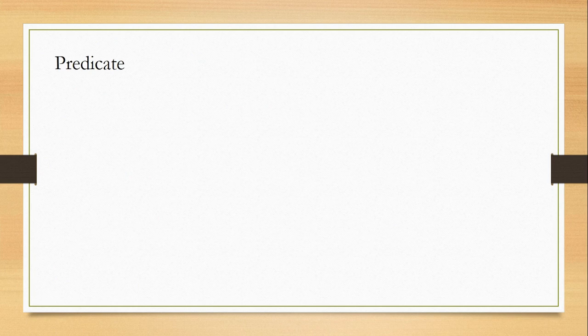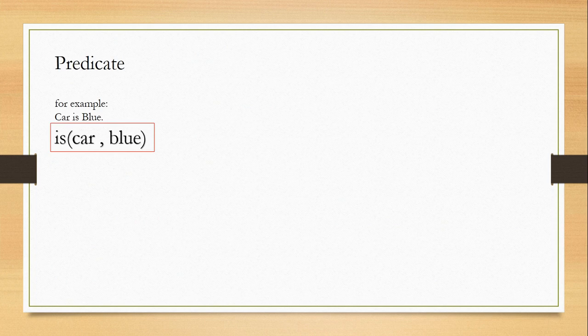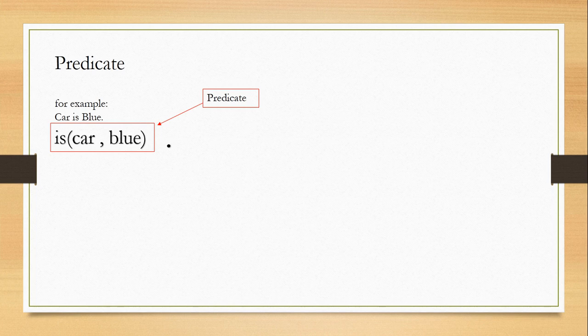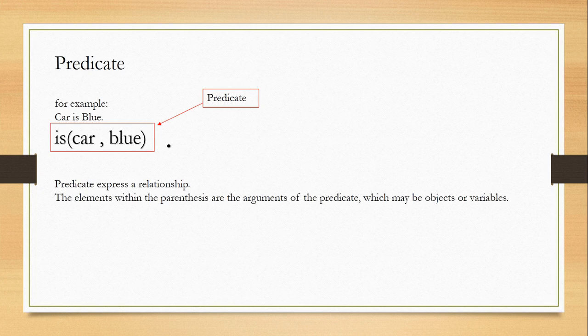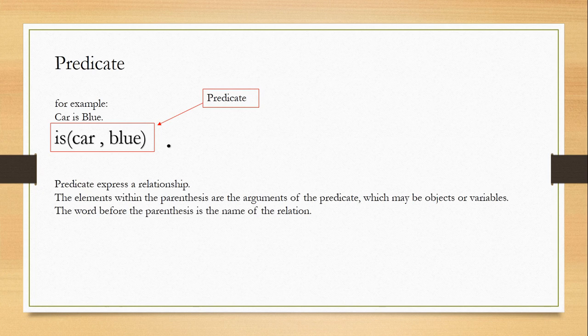Now, the next very important term is called predicate. For this explanation, I'm taking a new example: car is blue. Here, is is the relation, and car and blue both are the objects. Everything is written here - can we say it's a fact? No, it's not a fact because without a period I can't say it's a fact. If it has a period, I can say it's a fact. Without the period, I can say it is a predicate. Whatever is written before the period is called a predicate, and with a dot or full stop you can say it's called a fact. Predicate expresses a relationship. Elements within the parenthesis are objects or variables, and words before the parenthesis are the relation.